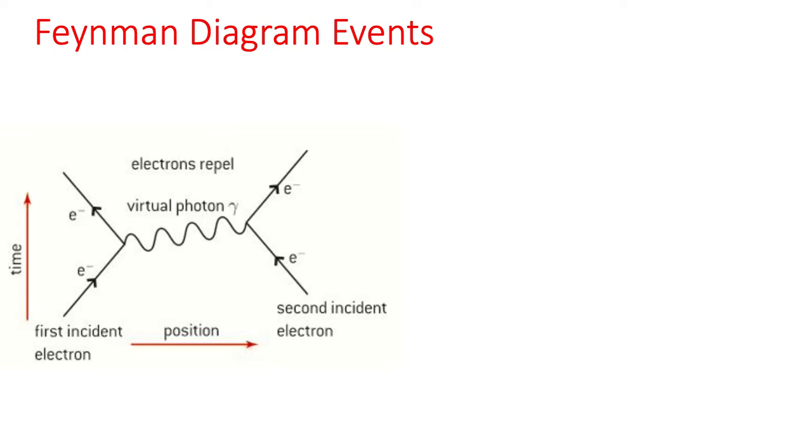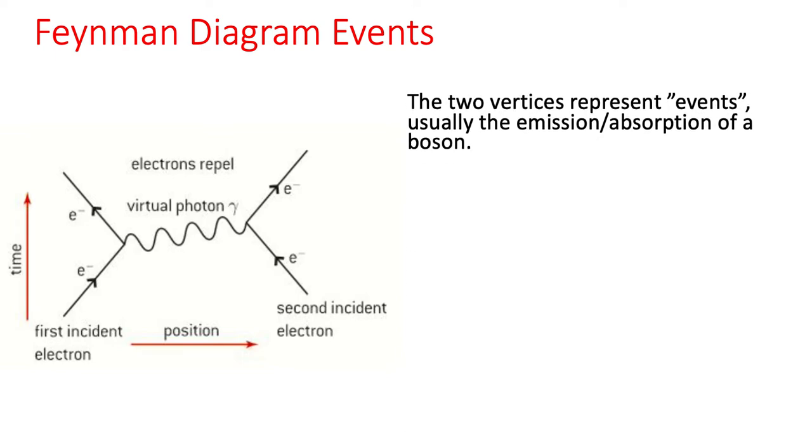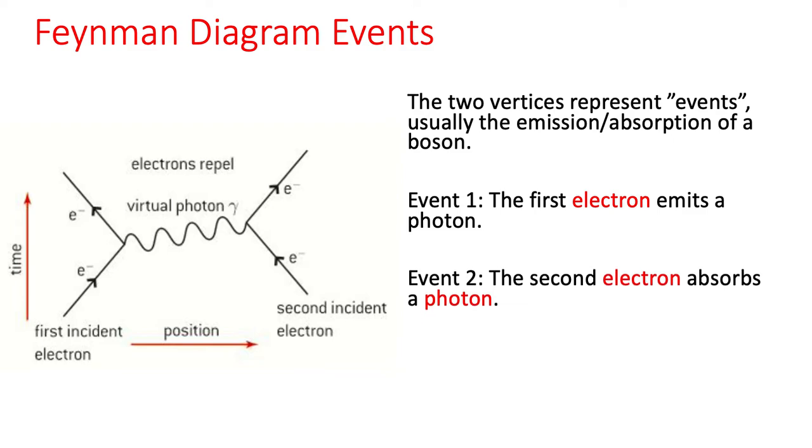Now, the way we might read this diagram is as follows. It's an interaction between two electrons, and we can think of events. So the first event would be our first incident electron emits a photon, and then the second one absorbs that photon. That's kind of nice and easy to follow. We've got the result of those two events being that they change their paths.